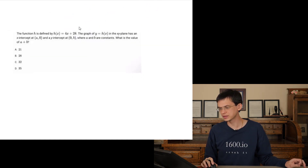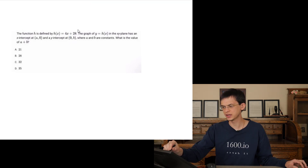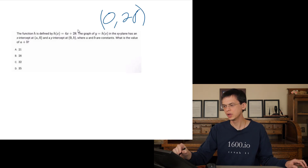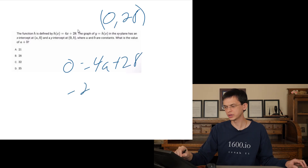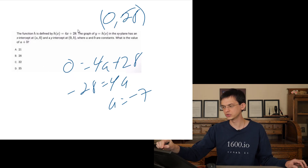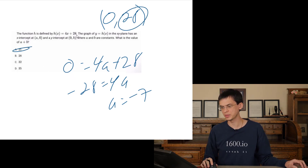The function is defined by a line with an x-intercept and a y-intercept. The y-intercept is given as 28, so b equals 28. Plug in to find a: 0 equals 4a plus 28, so negative 28 equals 4a, meaning a equals negative 7. The value of a plus b is 28 plus negative 7, which is 21.